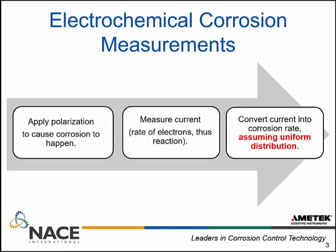It's really a three-step process: apply polarization to cause corrosion to happen, measure the current — which represents the rate of electrons or rate of reaction — and convert that to a corrosion rate. The key in converting to a corrosion rate is that I have to assume uniform distribution of current. Those of us who have been studying corrosion know that is rarely, if ever, the case. So we need to develop different techniques and higher technology to study localized, non-uniform corrosion.